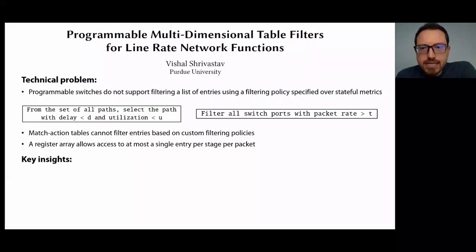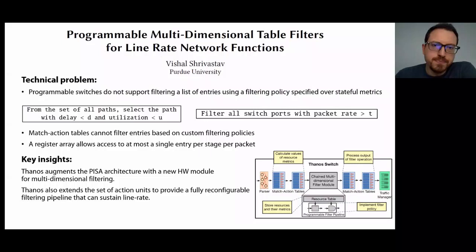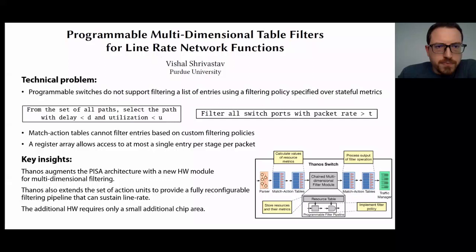These policies cannot be supported unless the packet goes multiple times through the switch using recirculation, which reduces the available network bandwidth. TANOS extends the PISA architecture to add an additional filtering module in hardware to support filtering of multiple dimensions directly in the data plane while sustaining line rate. This module uses a new data structure called a sorted multidimensional bidirectional map and extends the functionalities of the action units to provide a fully reconfigurable filtering pipeline. And this new module only requires a small additional area on the chip.